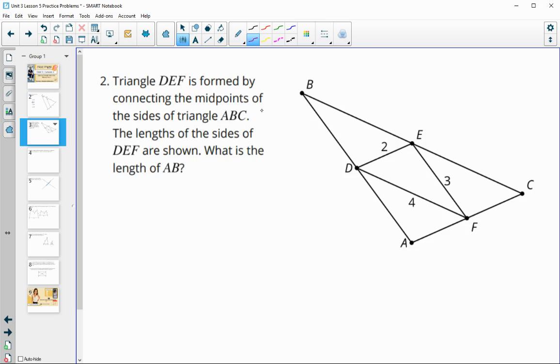Number two gives us triangle DEF here in the middle, created by connecting the midpoints of the sides. So D, E, and F are midpoints of the sides, and you could mark that if you want to. We know that those two pieces are the same. If F is the midpoint here, then these two are the same, and that gives us all these little congruent triangles.